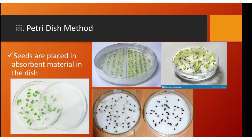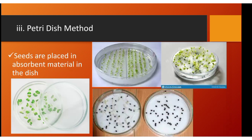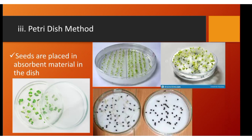Third is the petri dish method. Seeds are placed in an absorbent material — you can use the petri dish itself with paper napkin or tissue, lined with seeds. Count the seeds, sprinkle with water, then cover with the lid and wait for germination. To determine the percentage germination, compute the number of seeds germinated divided by the number of seeds sown.